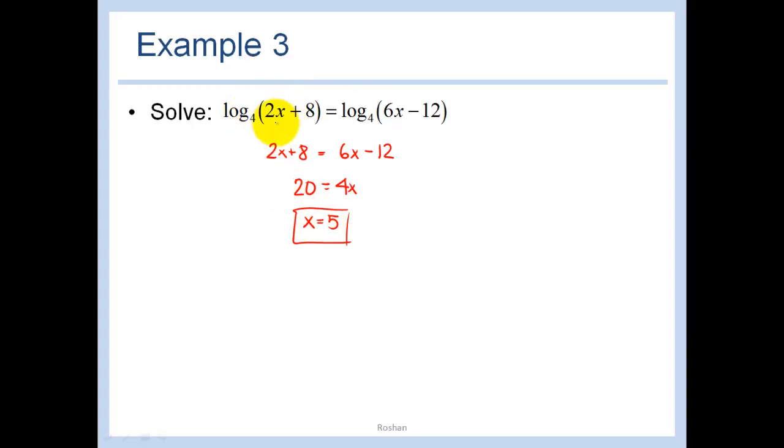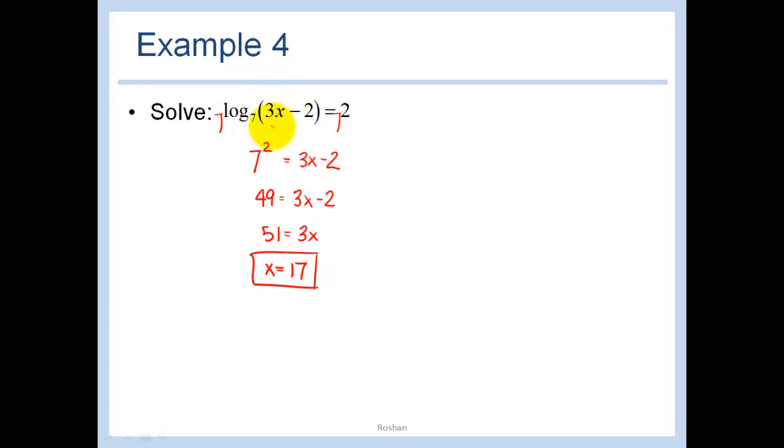When we do logarithms we want to make sure that whatever we're taking the logarithm of is greater than 0, because remember from our last lesson we had our domain restriction there. Let's do log base 7 of 3x minus 2 equals 2. Well this is just saying 7 squared, 7 to the second power is equal to 3x minus 2. To get rid of a log base 7 you just do both sides. 7 to the log base 7 is just 3x minus 2, and 49 is equal to 3x minus 2. Add 2 to both sides, 51 is equal to 3x. In other words x equals 17. When you put a 17 in here this is a positive number and so we are not worried one bit.